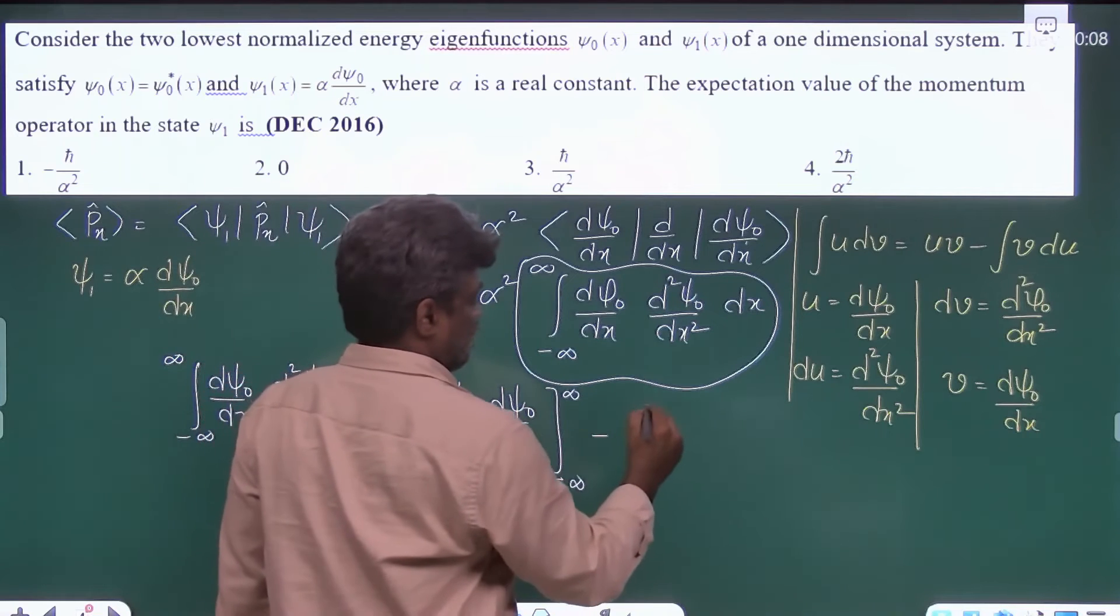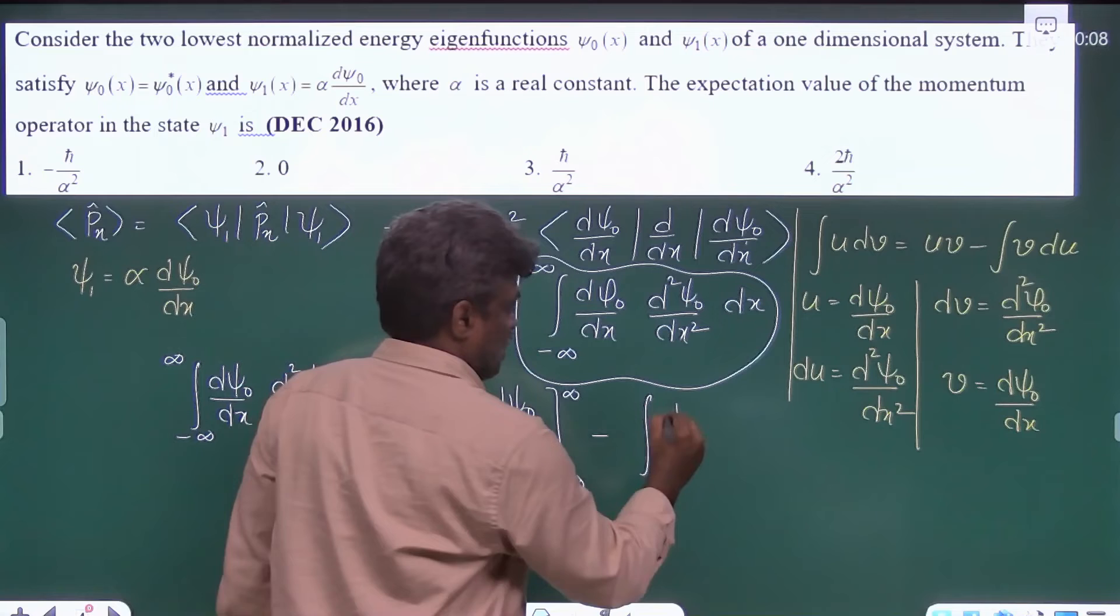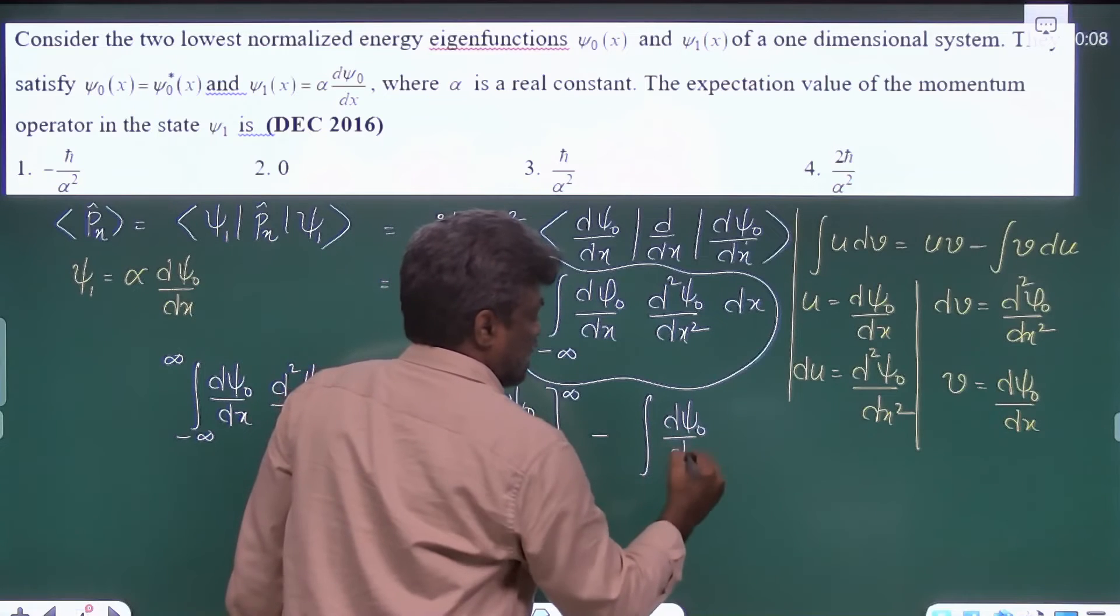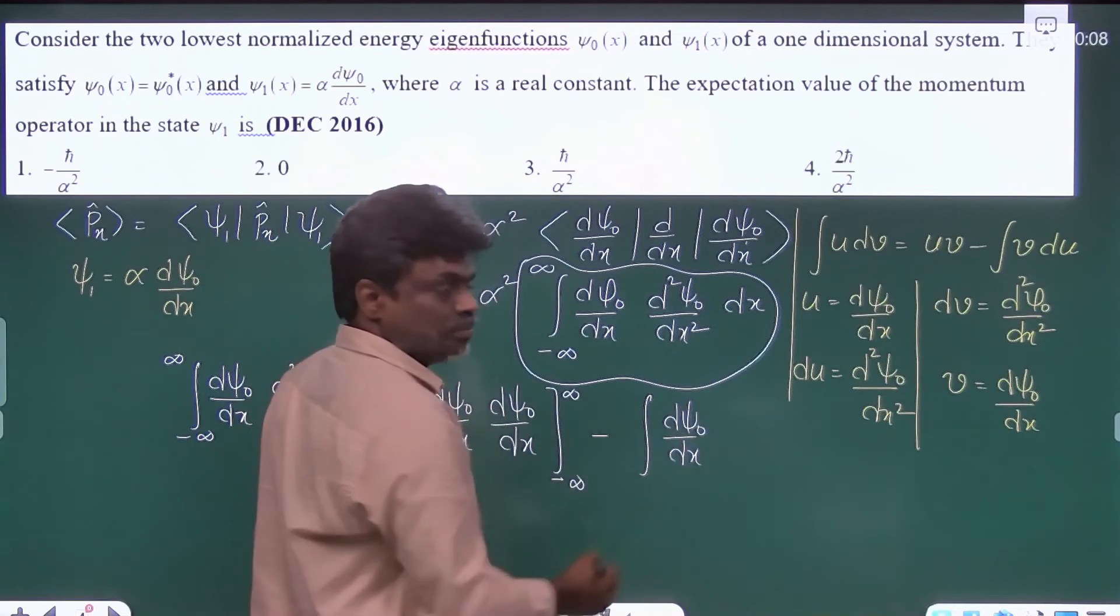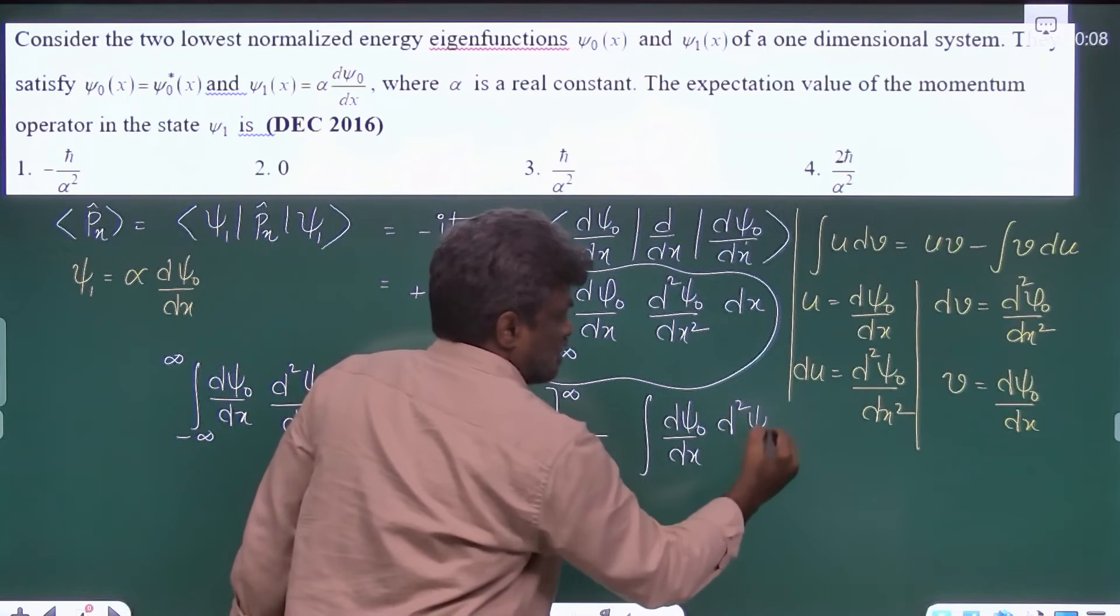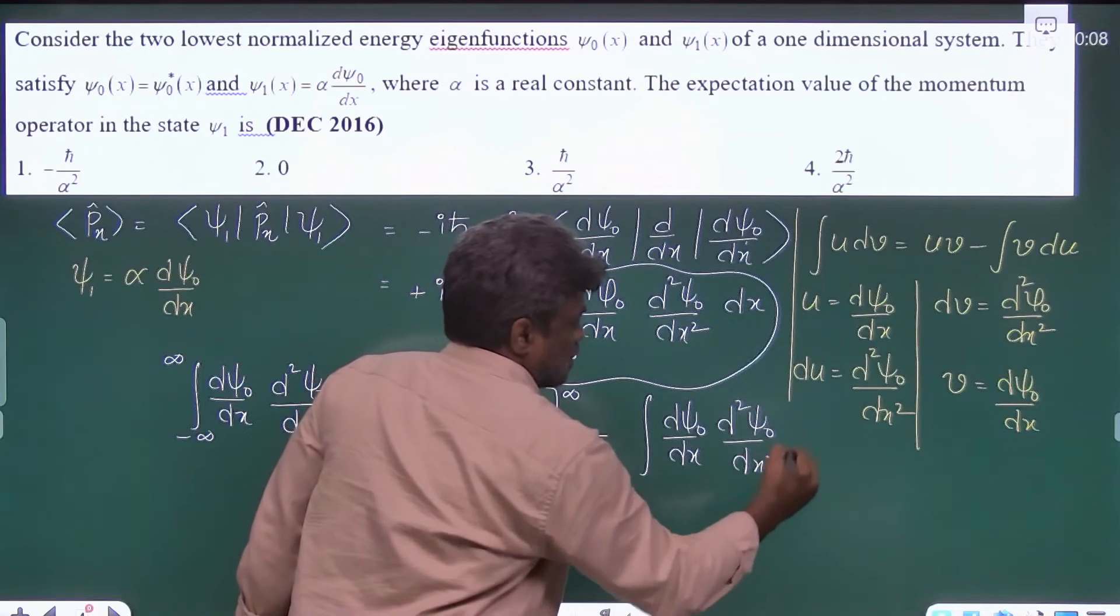minus integral—that v, v is d psi0 by dx, into du—du is d square psi0 by dx square dx.